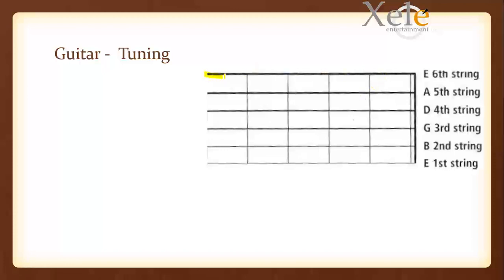Now usually we'll count from the thickest string, or the string at the top, and go all the way down to the thinnest string. As you can see, the thickest string here has a thick line while the thinnest string has a thinner line. That thickest string is usually string six, and the next one after that is string number five, and the next after that one is string number four, and the next after that is string number three.